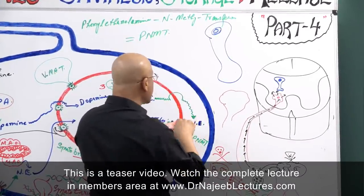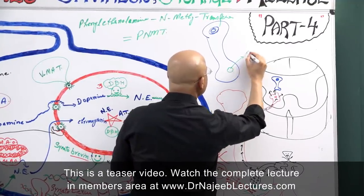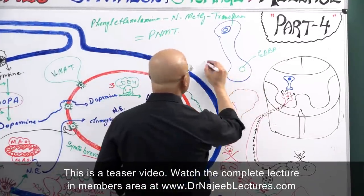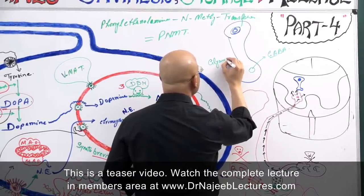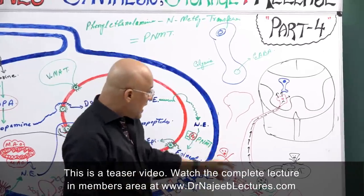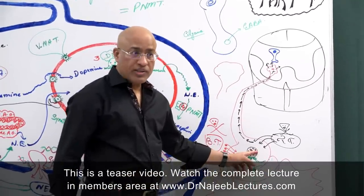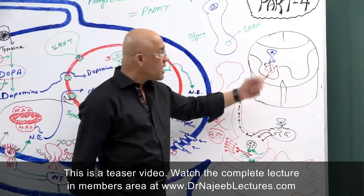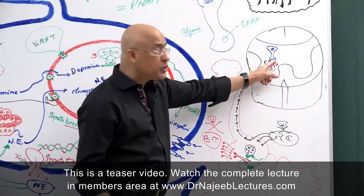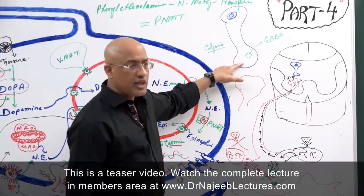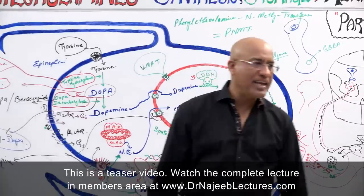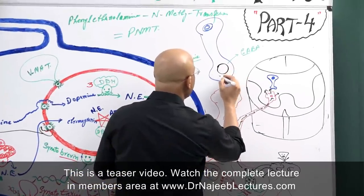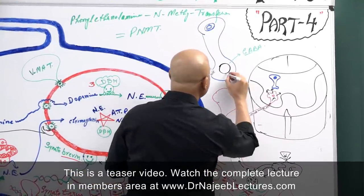These inhibitory interneurons contain inhibitory neurotransmitters — either GABA, making them GABAergic neurons, or glycine, making them glycinergic neurons. Tetanus toxin enters the cholinergic nerve endings, travels retrograde through the axoplasm to the spinal cord or brainstem, diffuses into these inhibitory interneurons — whether GABAergic or glycinergic — and then acts as a molecular scissor targeting the SNARE proteins in those cells.